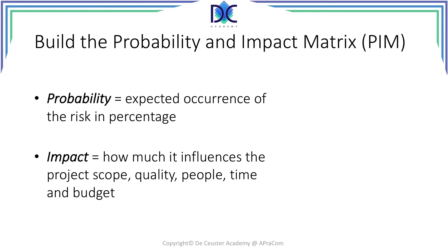A probability of exactly 0 and a probability of 100 are not uncertainties anymore. A probability of exactly 0 is a certainty that the risk will not occur, and when it's 100%, you are sure it will occur.